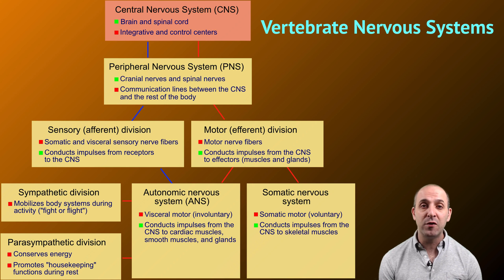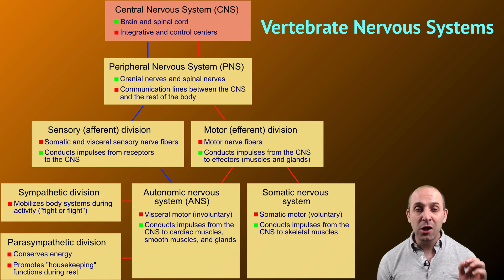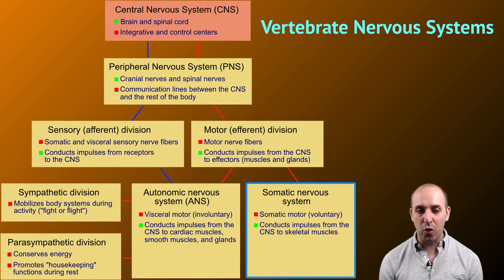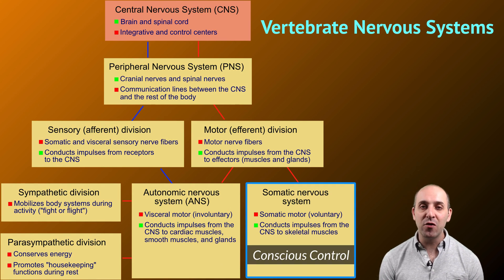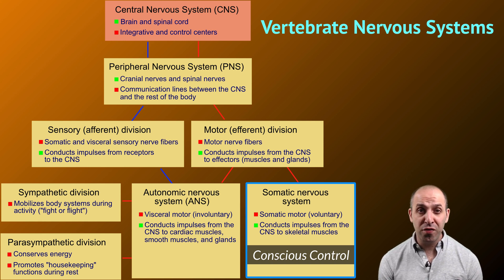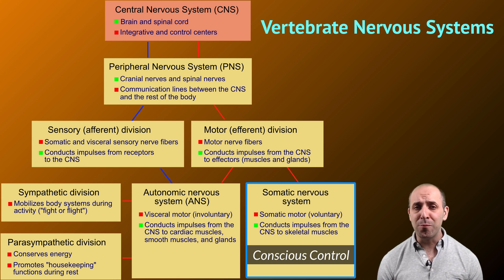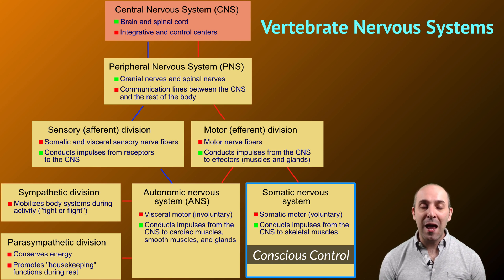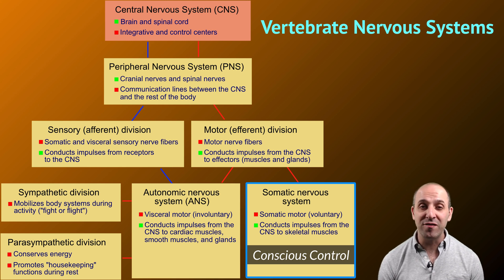The one point I want to make is that the somatic nervous system is the only division you have any conscious control over. All of the rest of our nervous system functions outside of our conscious control through the action of our unconscious brain. That's pretty cool and also relieving — you don't need to worry about things like dilating your blood vessels or making sure that peristaltic motion in your digestive system happens. That's all happening in your brain without you having to think about it.